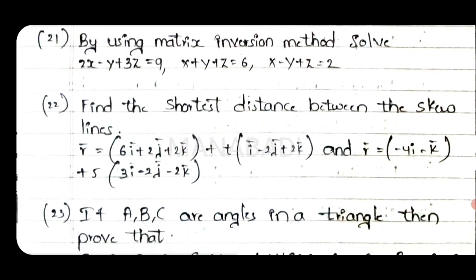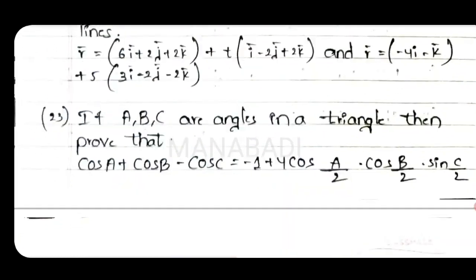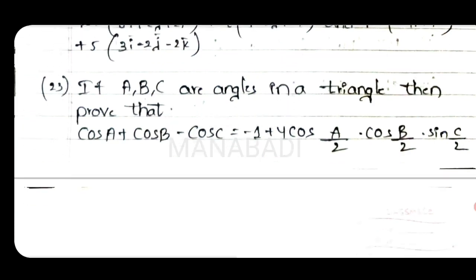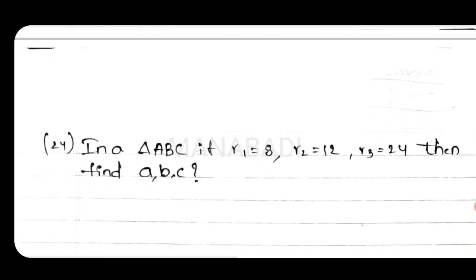Twenty-second question: find the shortest distance between the lines. Twenty-third question: if A, B, C are the angles in a triangle, then prove that cos A plus cos B minus cos C equals minus 1 plus 4 cos(A/2) cos(B/2) sin(C/2). Twenty-fourth question: in a triangle, if r1 equals 8, r2 equals 12, r3 equals 24, then find the values of a, b, c.